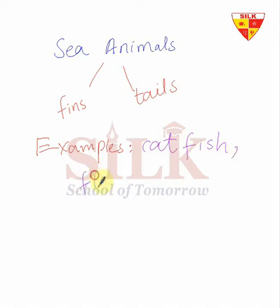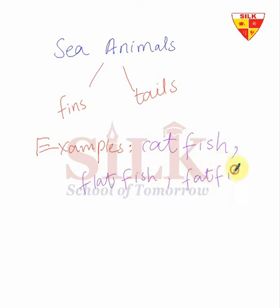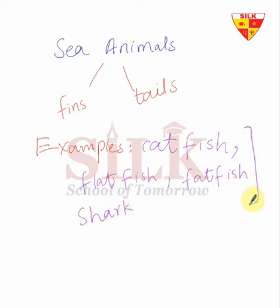There is flatfish and there is fatfish — one is flatfish and one is fatfish. There is also a shark in the sea. So here are some more examples of sea animals and they all live in water.